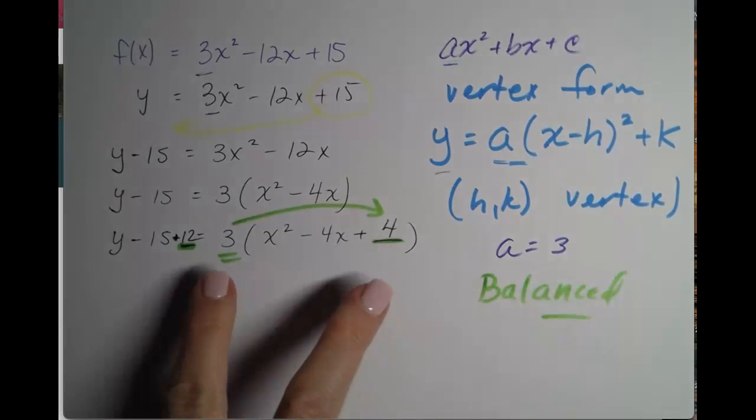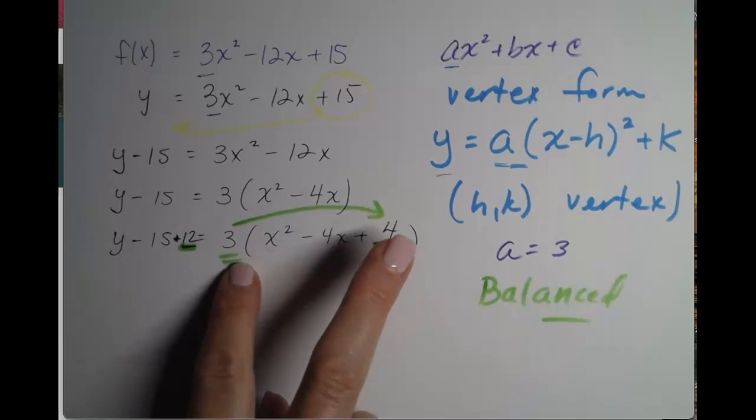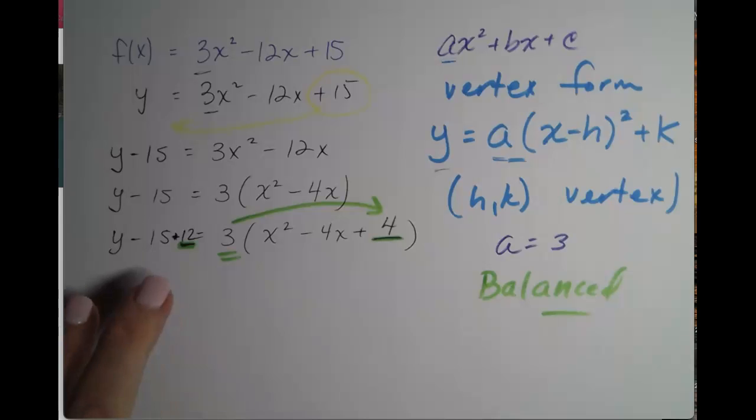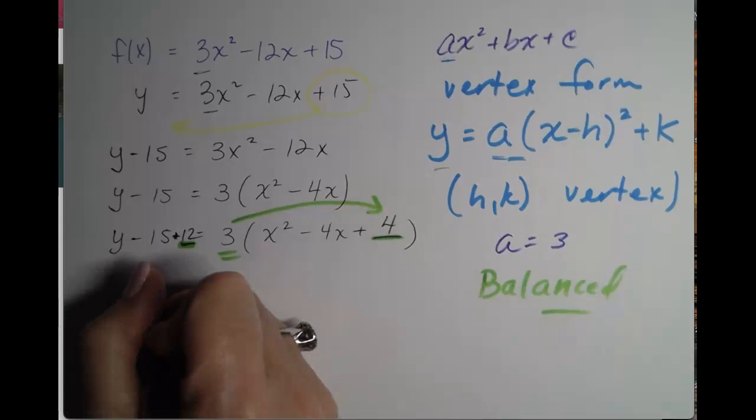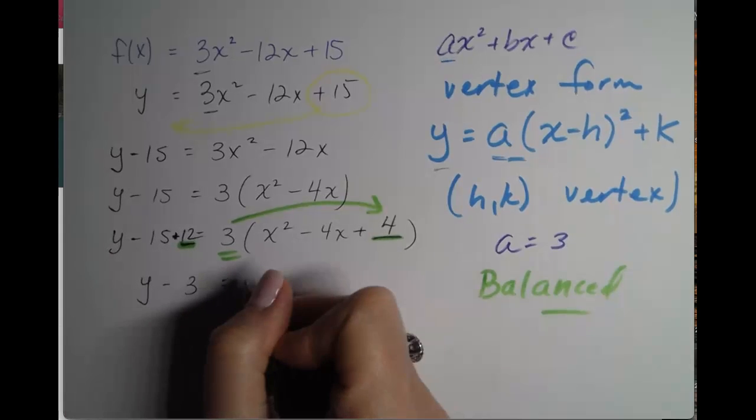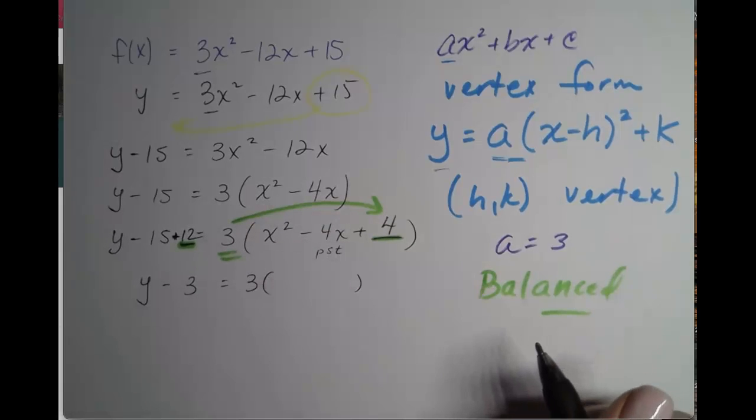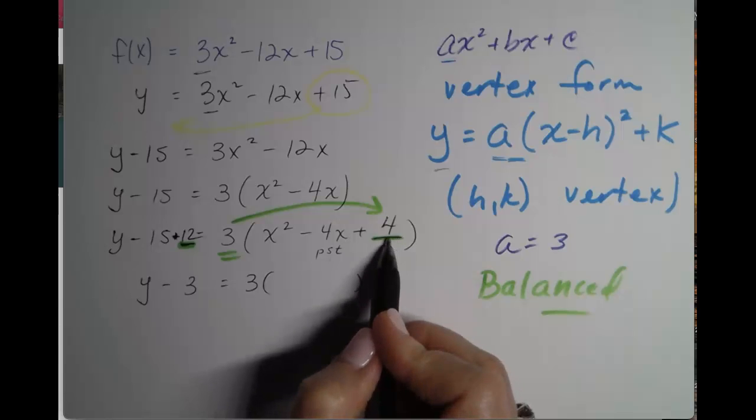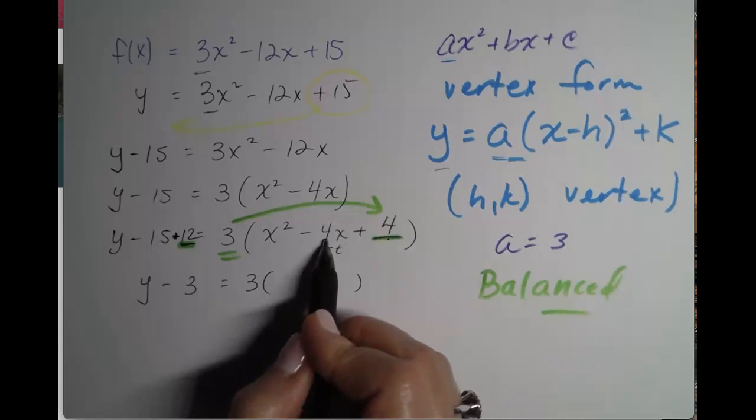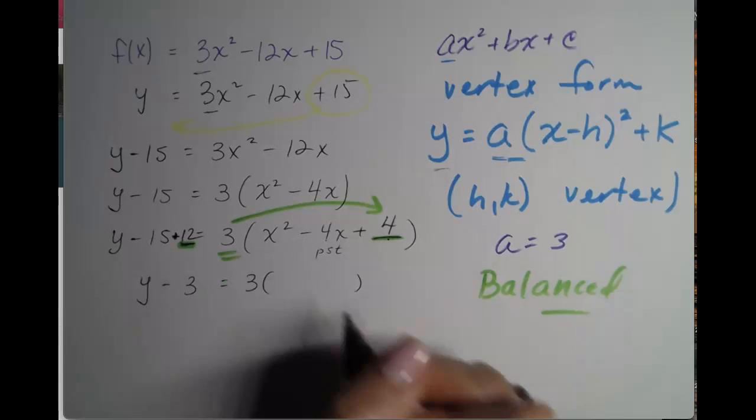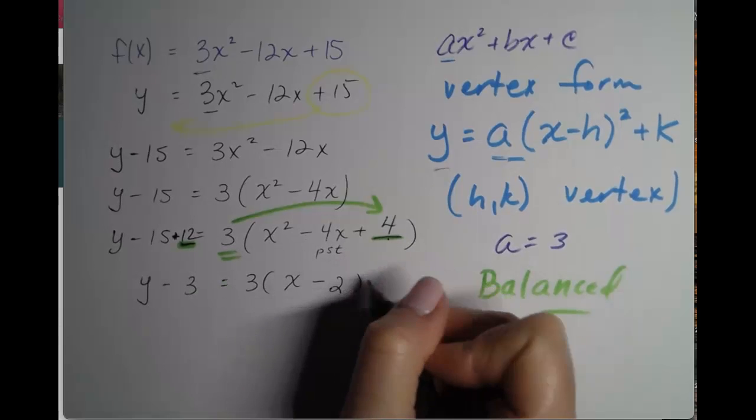In order to keep it balanced, whatever we add on the right, which is 3 times 4, must also be added to the left. So now, let's combine like terms on the left. That's y minus 3 equals 3 times. Now we have a perfect square trinomial on the right. Factors of 4 that add up to negative 4 are negative 2 and negative 2. Better known as x minus 2 squared.